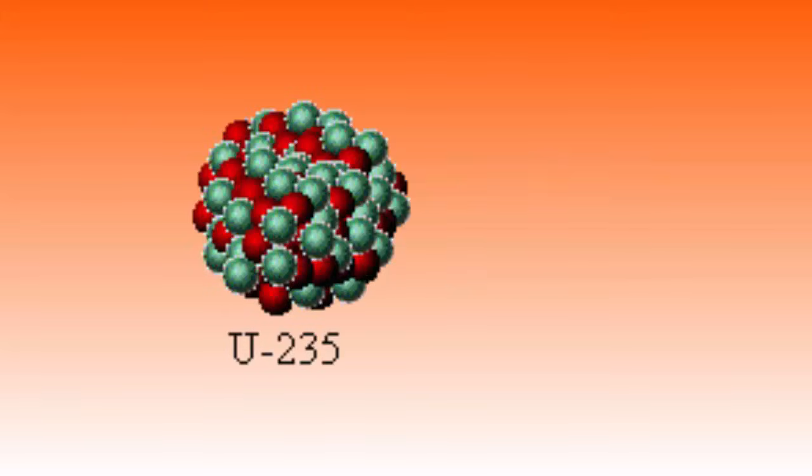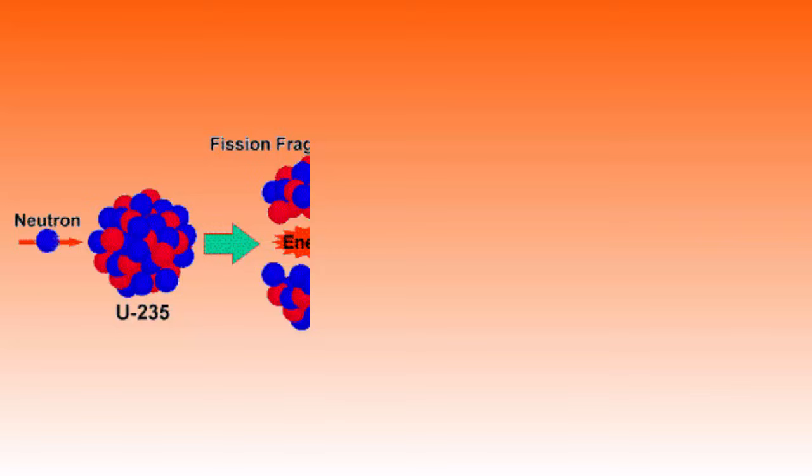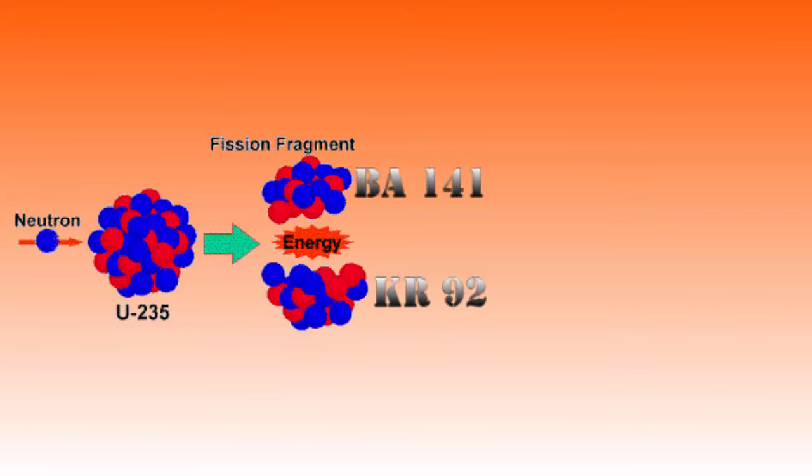Uranium-235 by itself is stable. If, however, an atom of uranium-235 is hit with a neutron, it will absorb that neutron, turning into uranium-236, which is unstable and spontaneously splits into a krypton-92 and a barium-141 molecule.